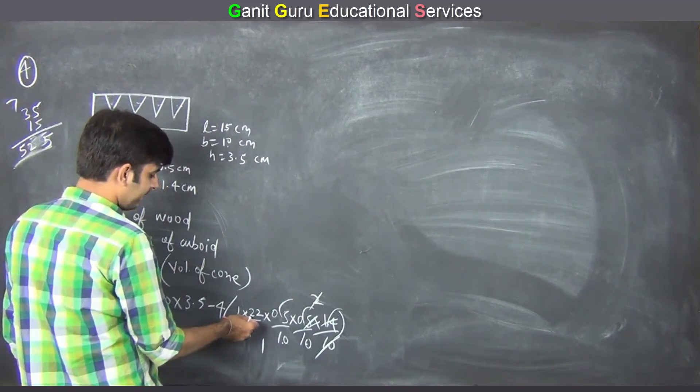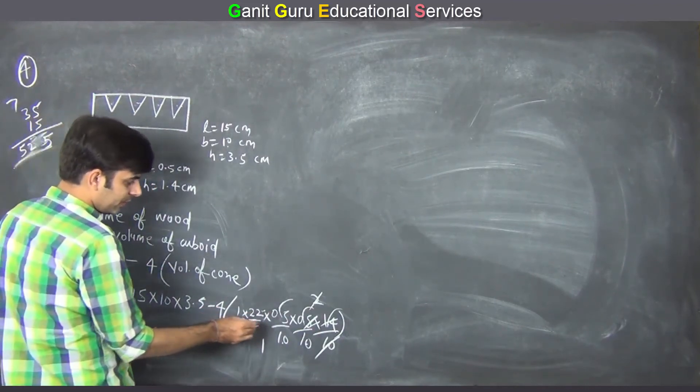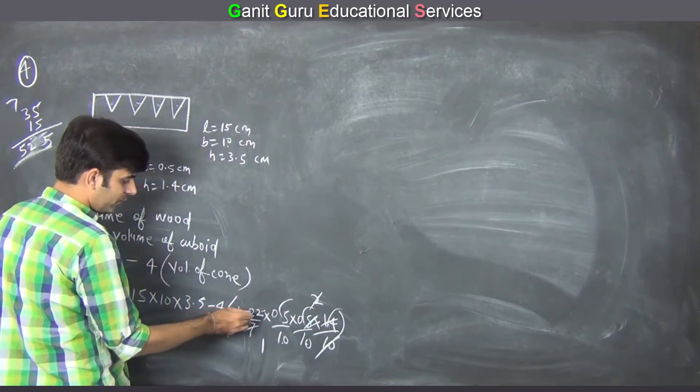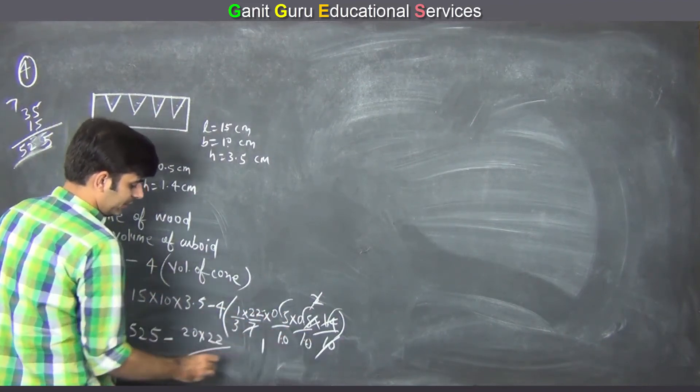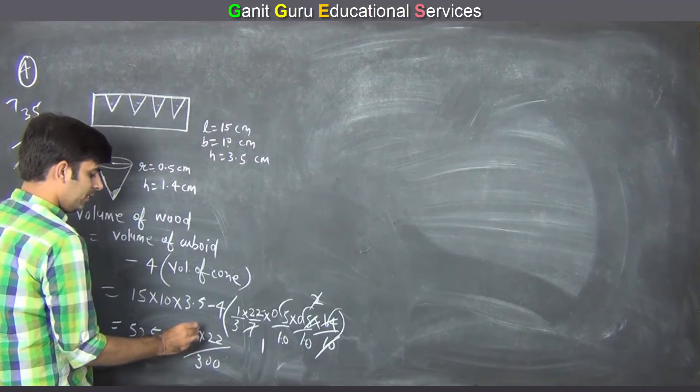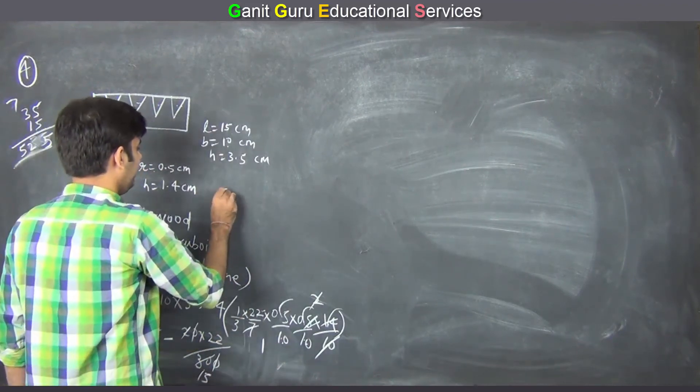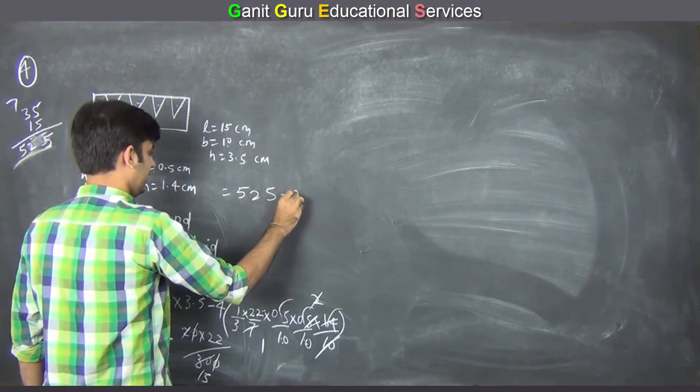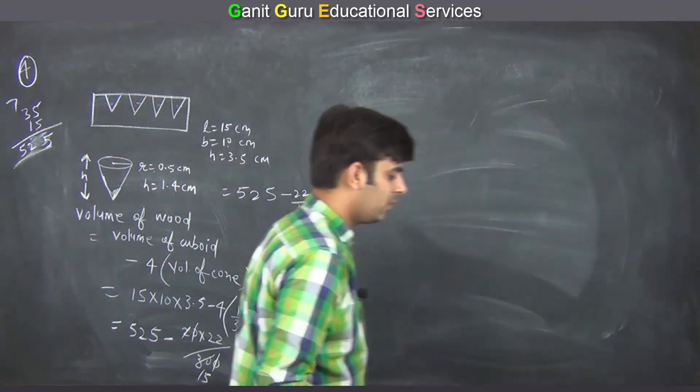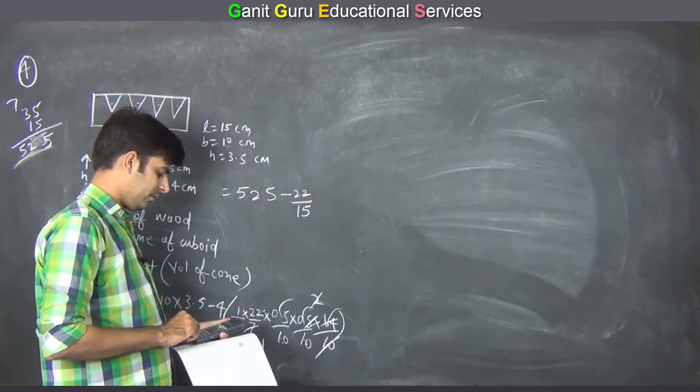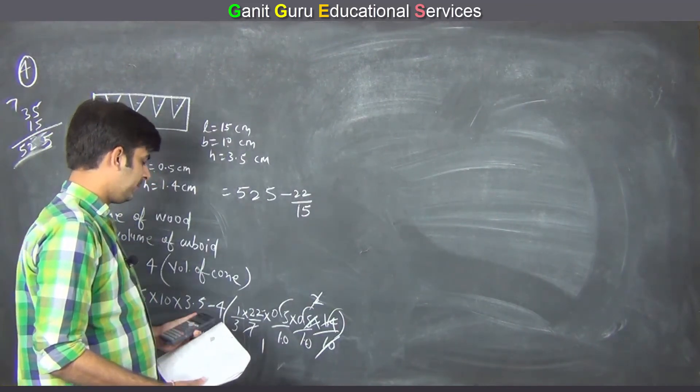Then we will move it. 5 into 4, 22. 5 into 4, 22, 300. You cancel out. 15 over 2, 525 minus 22 by 50.